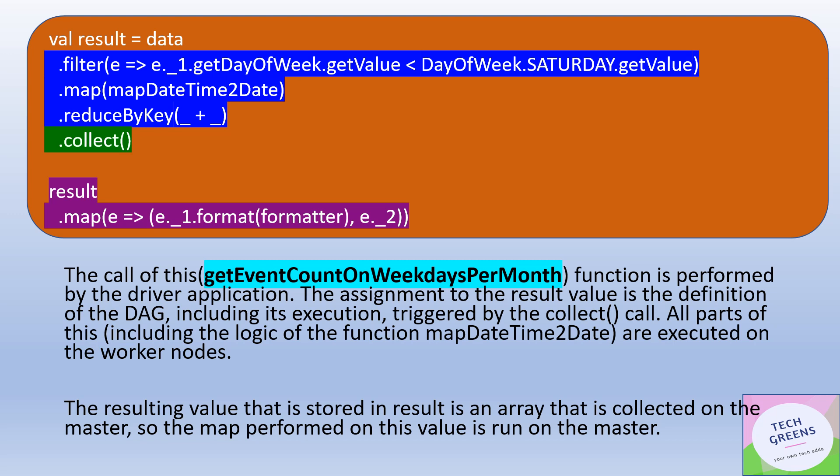We have charted out a list of the different transformations and actions. The three highlighted in blue are the transformations applied on the data, and all of these blue transformations would be executed on the worker node. When the Spark job is initiated, the base method `getEventCountOnWeekdaysPerMonth` is initiated by the driver application and then delegated to the worker nodes.